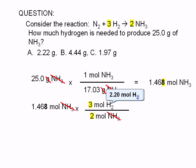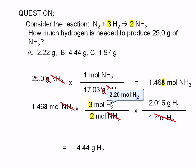But the choices given to us are in grams, so we need to convert our answer to grams. By now, you should know how to do this. We multiply moles of hydrogen by the molar mass of hydrogen. Carrying out the calculation gives an answer of 4.44 grams.